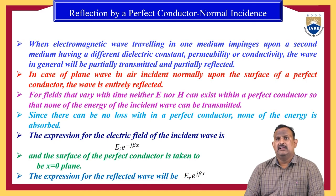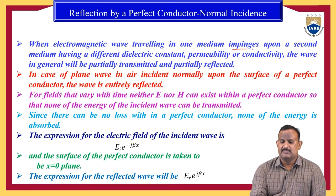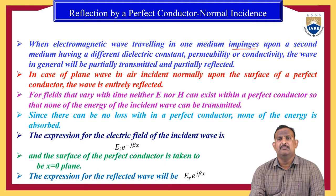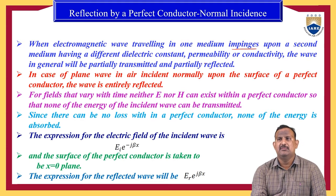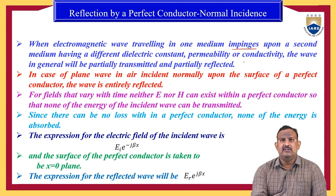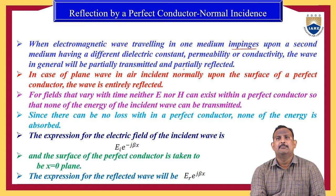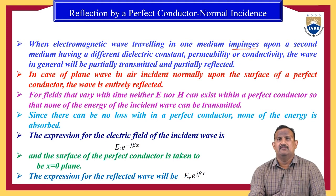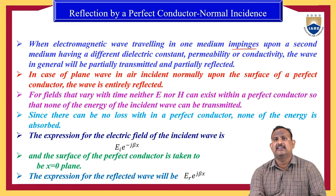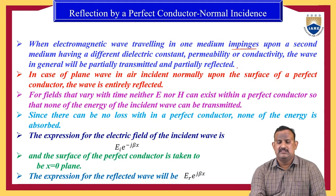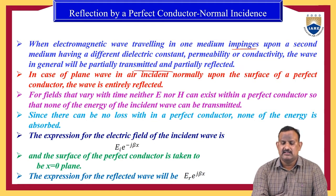When the electromagnetic wave traveling in one medium impinges upon a second medium having a different dielectric constant, permeability, and/or conductivity, the wave in general will be partially transmitted and partially reflected.